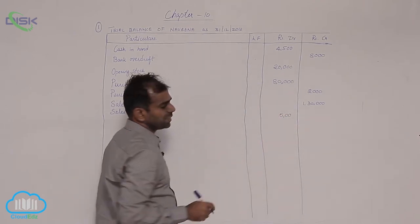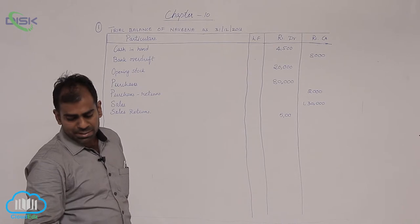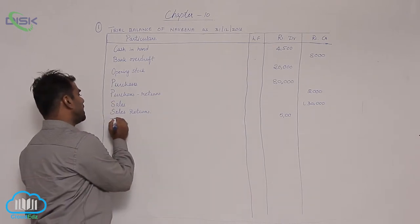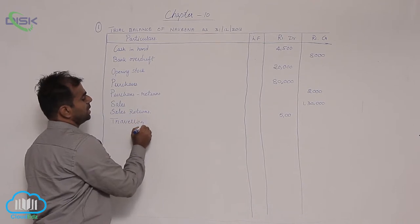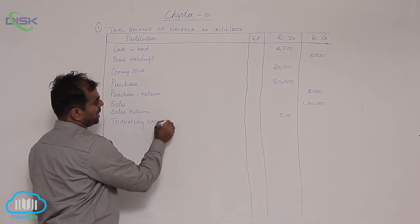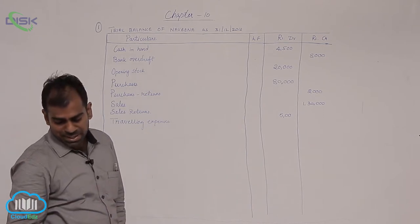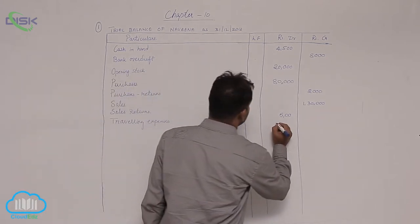Now next you have traveling expenses. Traveling expenses are nominal account. So because it is expense it shows debit balance. Traveling expenses 1800.